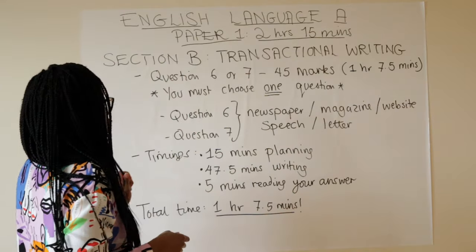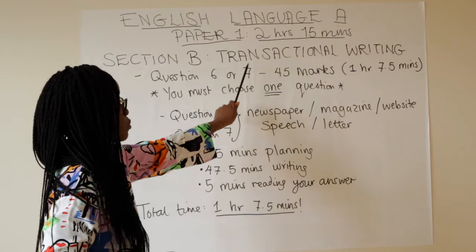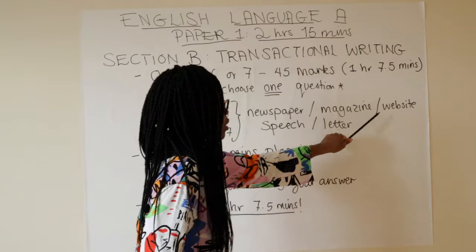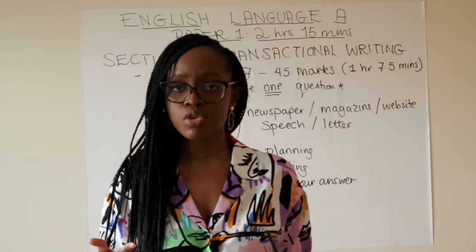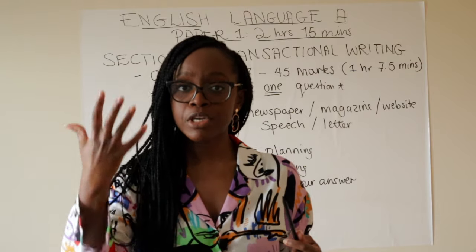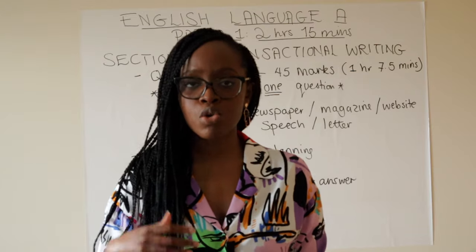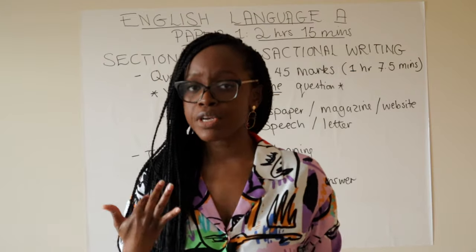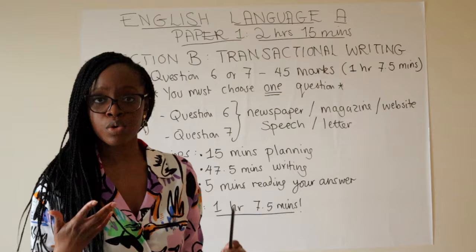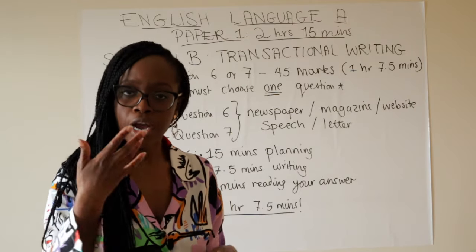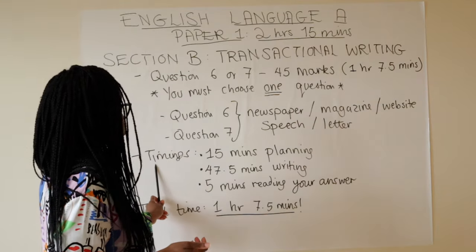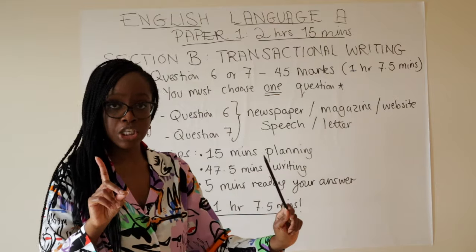Section B is called transactional writing — you produce a non-fiction piece of text. You'll always have either question six or question seven to choose from. You only pick one and answer it for the remaining time; never answer both. Since this is non-fiction writing, it will always be one of the following forms: a newspaper article, magazine article, website, speech, or letter. Make sure to check out the videos I've created on how to develop each of these forms.